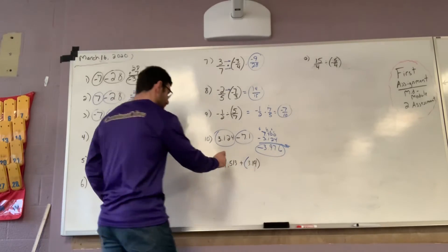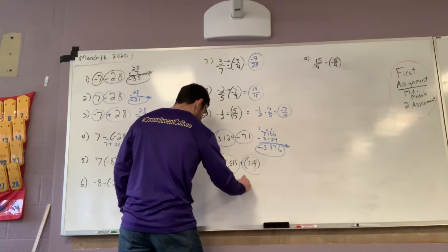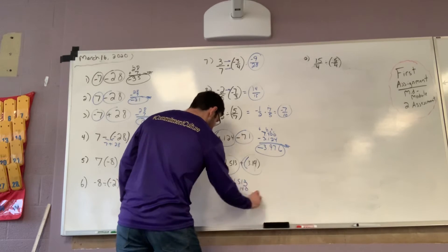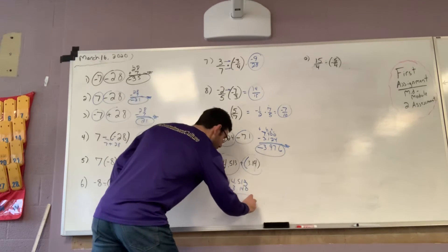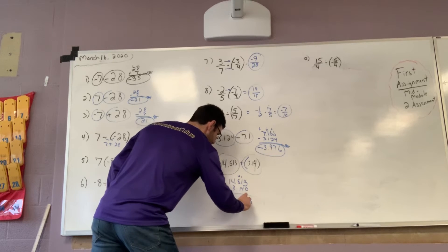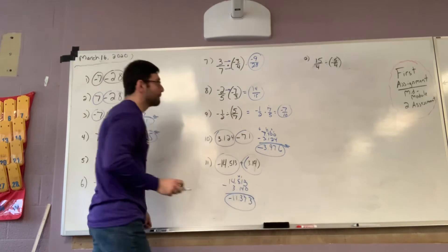Okay, circle. Different signs, subtract. Keep the same number of decimals. 3. Regroup. 11 minus 4 is going to be 7. I hope. 3. Decimal. 1, 1. Larger sign negative. Bam.